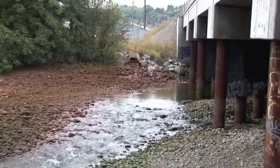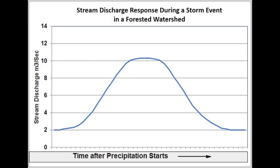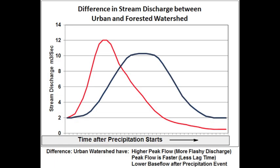Let's see how this affects the stream flow of receiving waters. This is a typical hydrograph for a stream in a forested watershed. There are three main ways urbanization affects stream flow. One, it shortens the time to peak flow — water is rapidly conveyed to the stream after a rain event. Two, it heightens peak flow. Less water infiltrates and is stored in the soil, causing more runoff from the surface. This high energy flow can erode and damage stream banks.